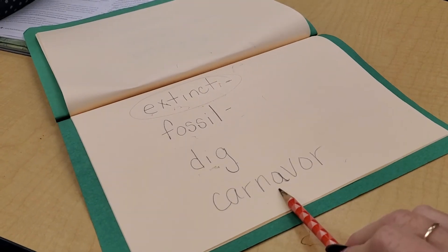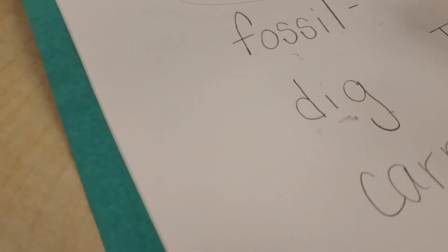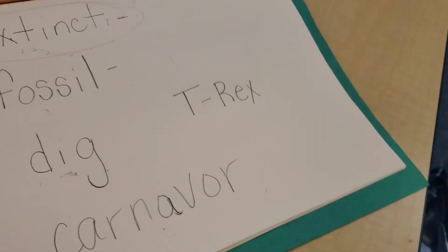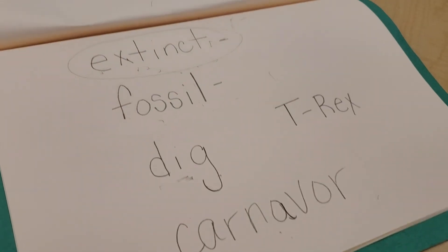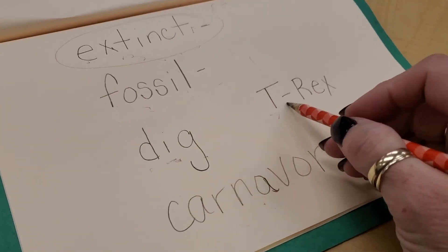Herbivore means they eat only plants. Carnivore would be, an example of that would be a T-Rex. T-Rex. Tyrannosaurus Rex. You can spell it T-Rex.